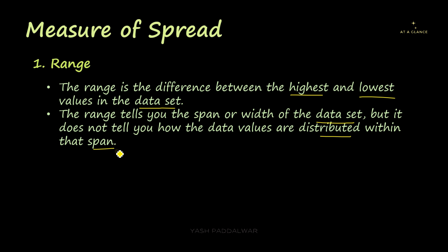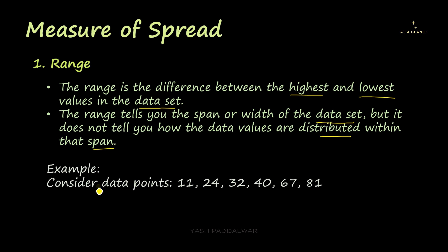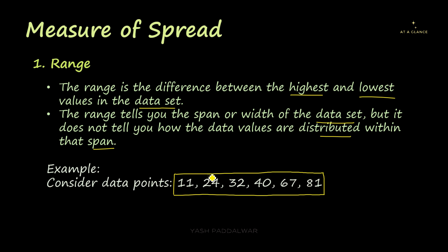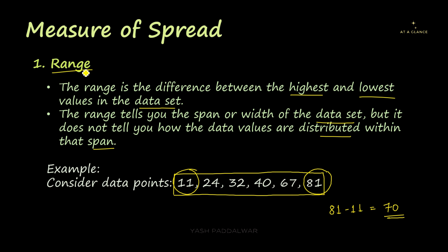Range does not tell you the behavior of spread present in the data set. For example, if we consider the data points 11, 24, 32, 40, 67 and 81, and we have to calculate the range, it is very simple. The highest value is 81 and the lowest value is 11. The difference is 81 minus 11, which is 70. So the range for this particular data set is 70.